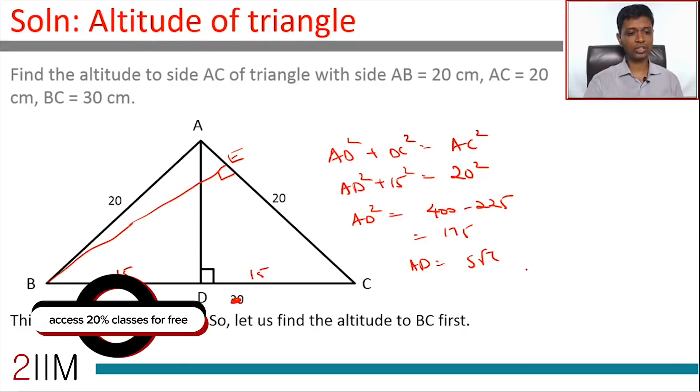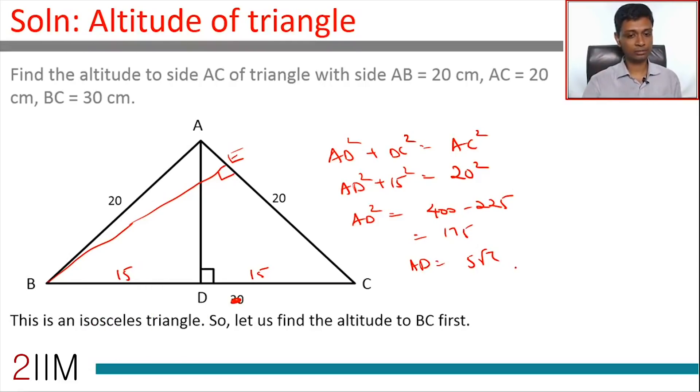If you found altitude to BC, why have you found that? Practically because it is easier to find, nothing more than that. Right, now think about it. I know altitude and base here. You know the base there. How do I find the altitude?